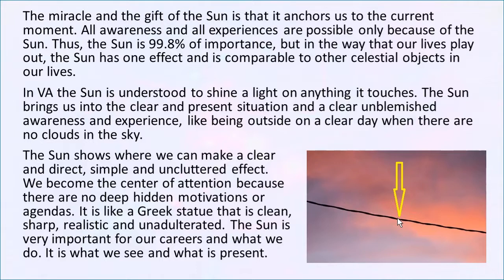Thus, the Sun is 99.8% of importance in astrology, as well as in life. But in the way our lives play out, the Sun has one effect and is comparable to the other celestial objects. What's happening is that as a basic function, the Sun is 99.8%. But when you put the other planets in there with their functions and the roles they play, that 99.8% that makes the whole story of life possible becomes one function. And that function of the Sun within the context of the chart is it shines a light on things. It brings you into the current, visible, present moment.